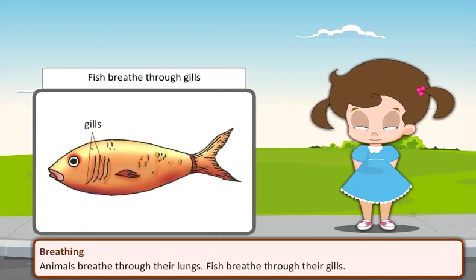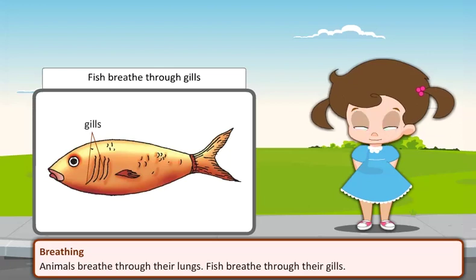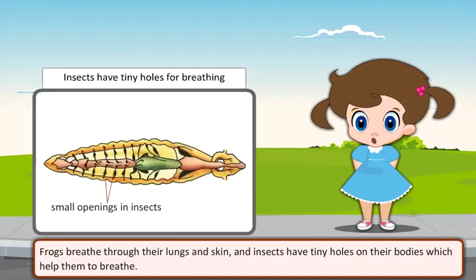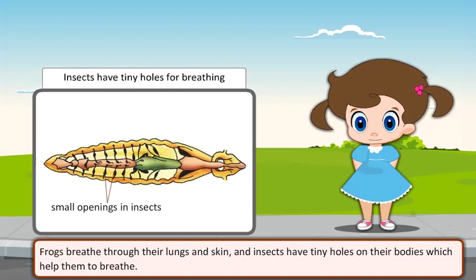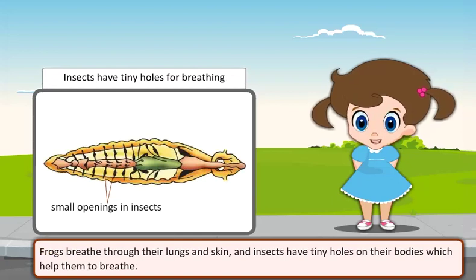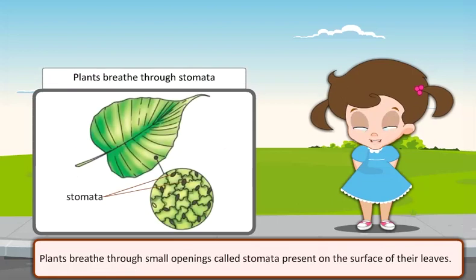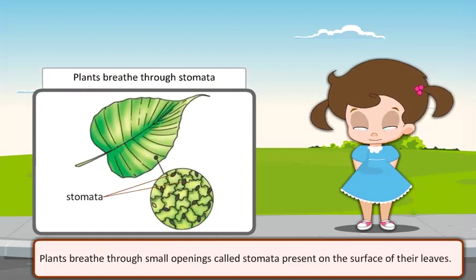Breathing: Animals breathe through their lungs. Fish breathe through their gills. Frogs breathe through their lungs and skin. And insects have tiny holes on their bodies which help them to breathe. Plants breathe through small openings called stomata present on the surface of their leaves.